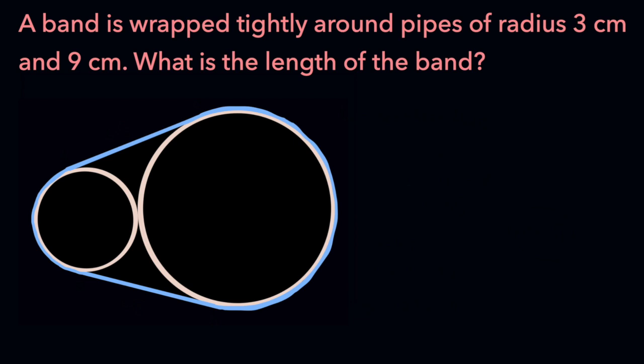In this video, we're going to be going over the following problem. A band is wrapped tightly around pipes of radius 3 cm and 9 cm. What is the length of the band?